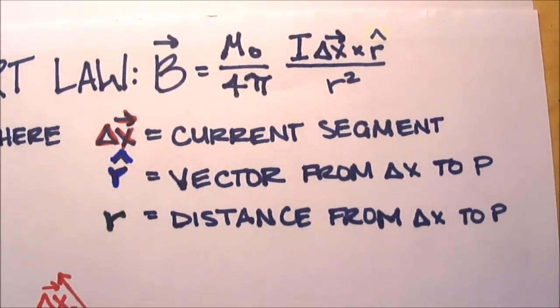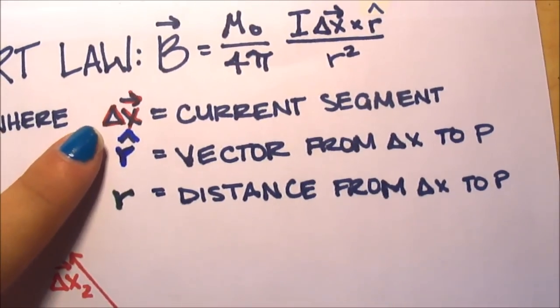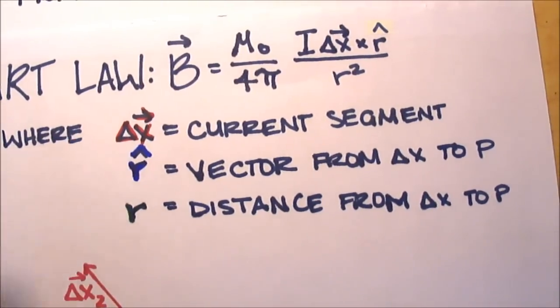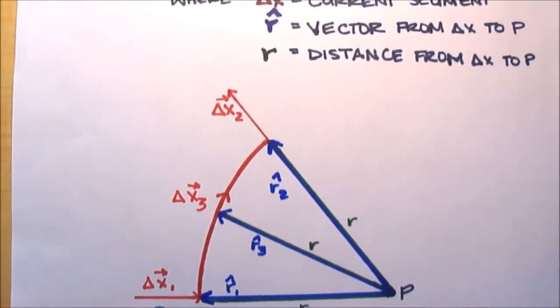As you can see here, it's demonstrated in the red. The r̂, which is just a vector from Δx to P, is demonstrated here in the blue.